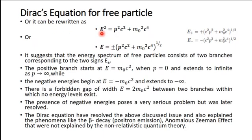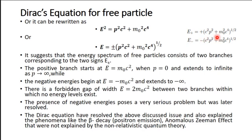This gives E-squared equals p-squared c-squared plus m-naught-squared c-to-the-fourth. Taking the square root, E equals plus or minus the square root of p-squared c-squared plus m-naught-squared c-to-the-fourth. So there are two solutions: E-plus equals positive root of (c-squared p-squared plus m-naught-squared c-to-the-fourth), and E-minus equals the negative of that root.